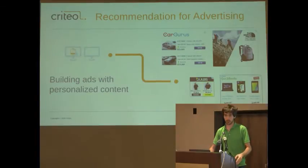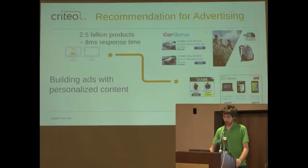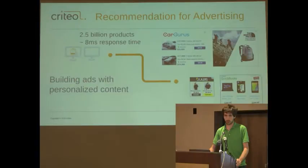With products that are similar to the products that I've seen, or products that we believe are going to interest them. That's a fairly typical recommender problem. One big issue for us is the scale of the operations, because we have approximately 8 milliseconds to choose a set of products among 2.5 billion products possible.